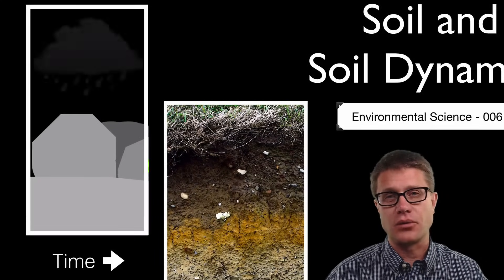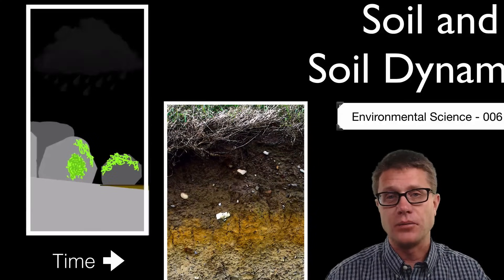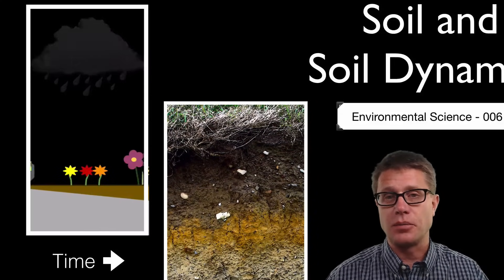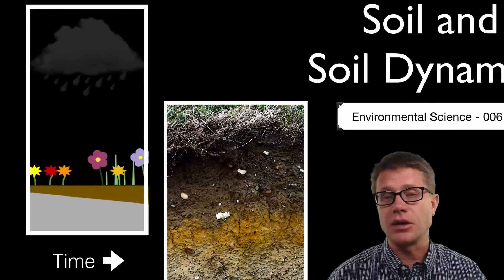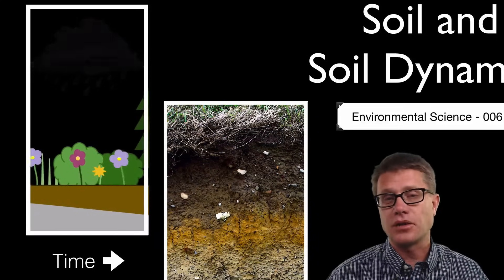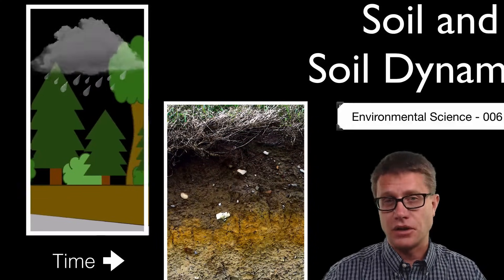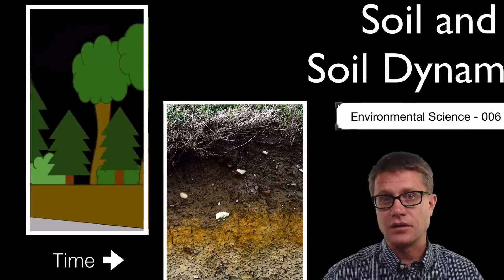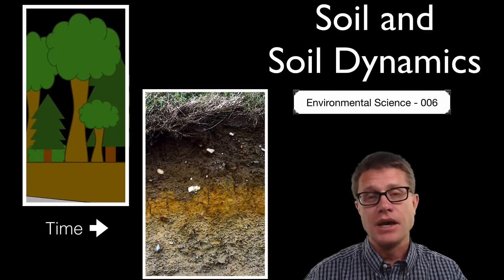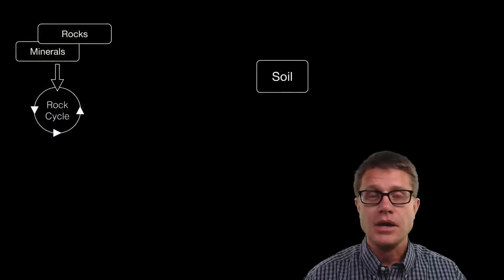We start with regular rock, and then over time what we have is weathering. We have physical weathering where we break the rock down into smaller particles. We have chemical reactions or chemical weathering. We have biological weathering as well. And so it takes a long time for us to go from rock to soil that we can grow our crops in. And the sad thing is that it can all be lost overnight.